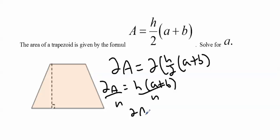So now I have 2 big A over H is equal to A plus B. I'm trying to solve this for A, so I'm just going to subtract B from both sides. So now I have 2A, big A, over H minus B is equal to little a. It's literally that simple if you just treat the variables as if it's the only variable and just do the arithmetic.